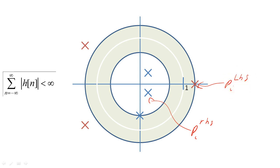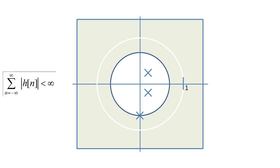If the system is causal, like most of our systems will be, all poles in the system must be inside the unit circle.